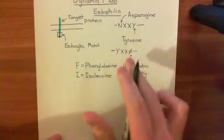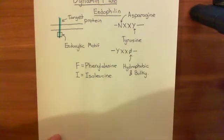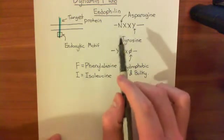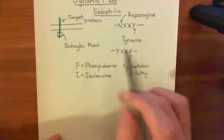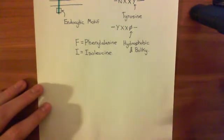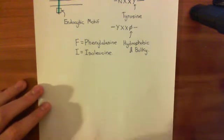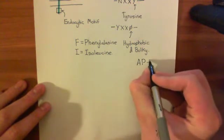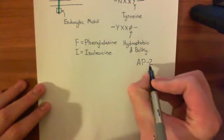Both of these sequences of four amino acids function as endocytic motifs. So if your target protein has one of these visible in its cytoplasmic domain, then it will bind to adaptor proteins. The adaptor protein complex that is going to be important in endocytosing target proteins from the plasma membrane is the adaptor protein complex II, also known as the AP2 complex.